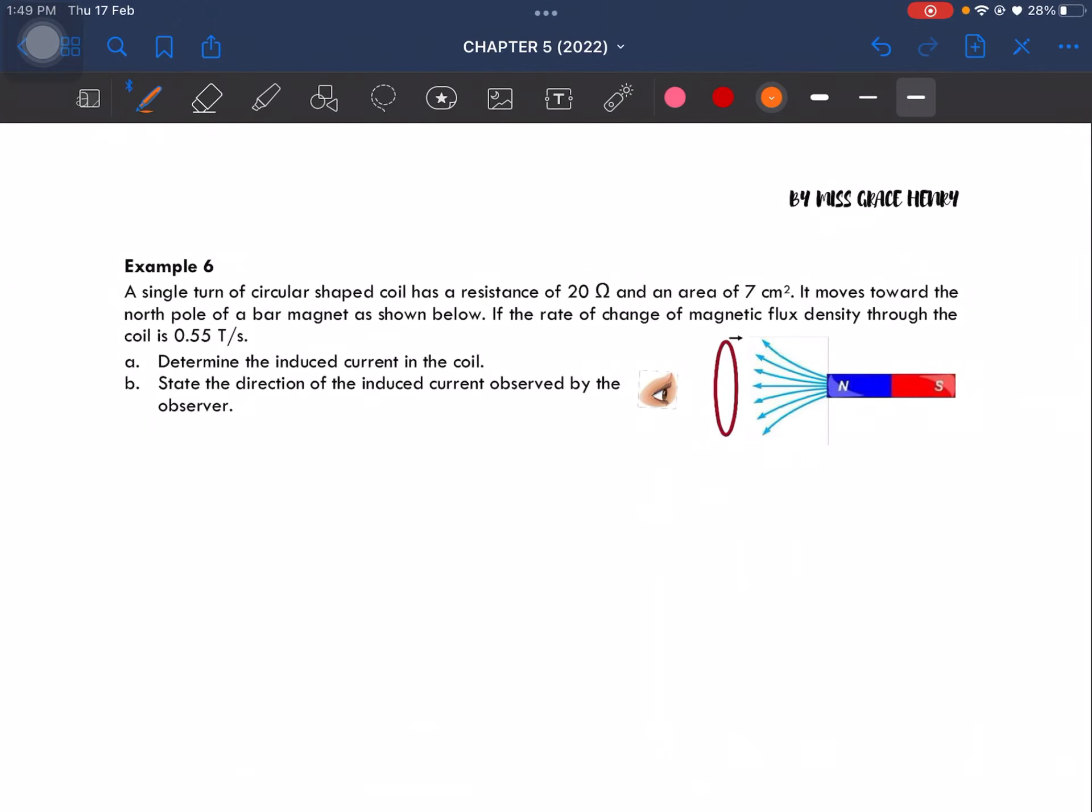Example 6. A single turn of a circular shaped coil has a resistance of 20 ohm and area of 7 cm². It moves towards the north pole. If the rate of change of magnetic flux density is 0.55 tesla per second, determine the induced current and state the direction of the induced current observed by the observer.